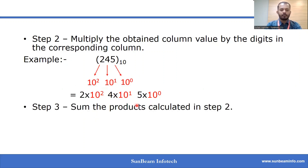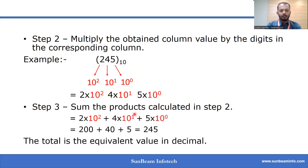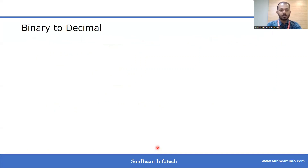In the third step, we sum the products calculated in step 2. After calculating the sum, we get 245 — this total is the equivalent value in decimal number system. By following these three steps we can convert any other base to decimal. Now let's look at binary to decimal conversion.